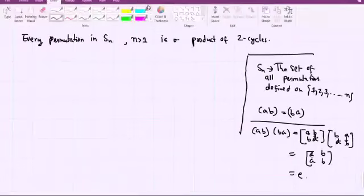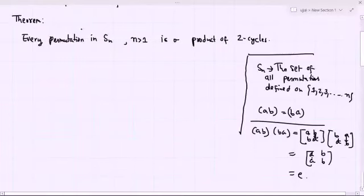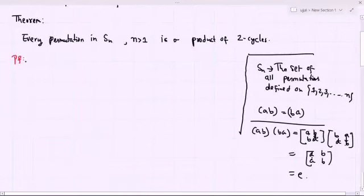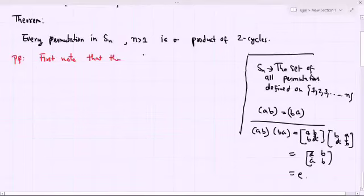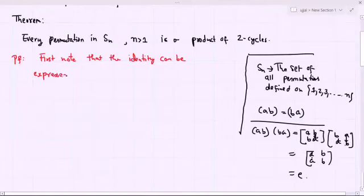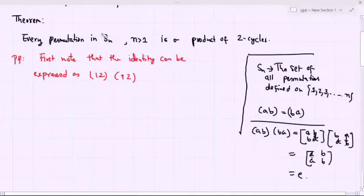Now let us look at the proof. The proof is very simple. Once we discuss the proof, we will see some examples. First, note that the identity can be expressed as (1, 2)(1, 2). This means: for any n bigger than 1, the identity permutation of Sn can be expressed as the product of two-cycles (1, 2) and (1, 2).